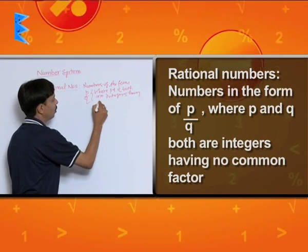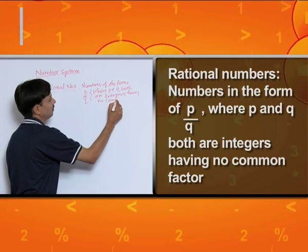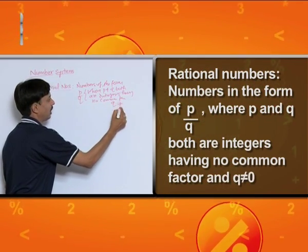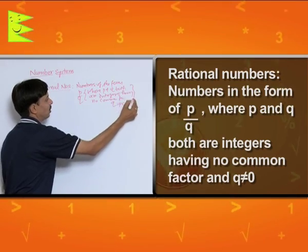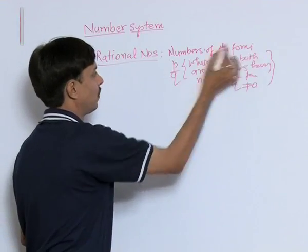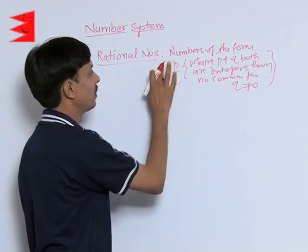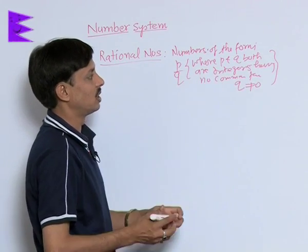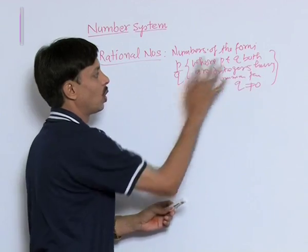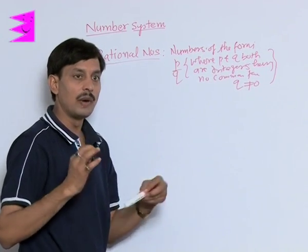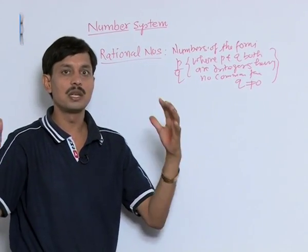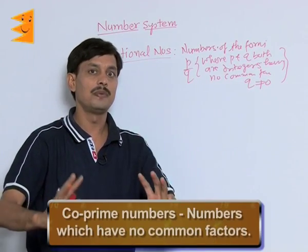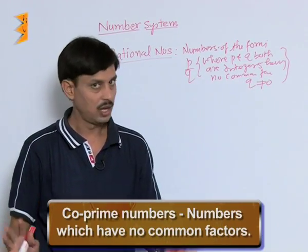Numbers of the form P by Q where P and Q both are integers having no common factor. You know well, if two numbers do not have any common factor, that is if their HCF is 1, if no number is common...